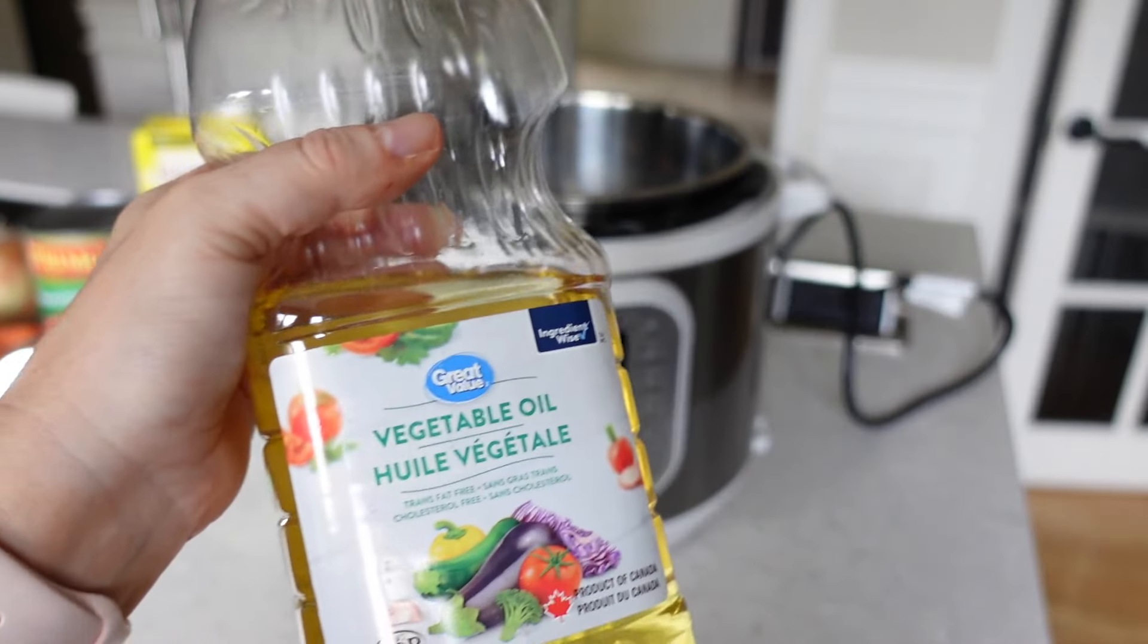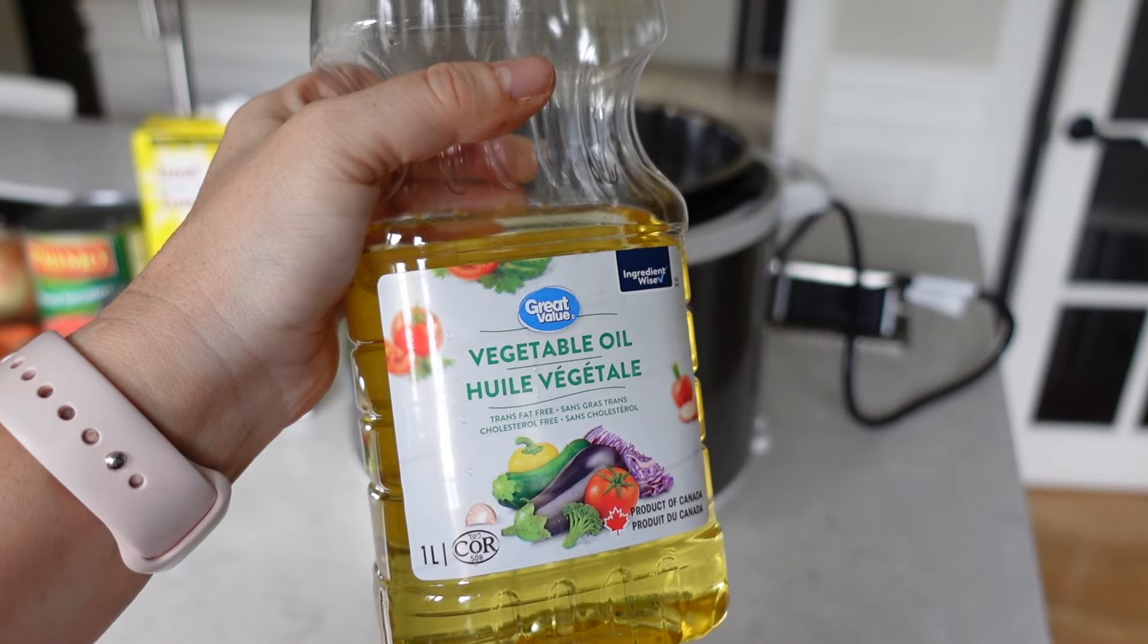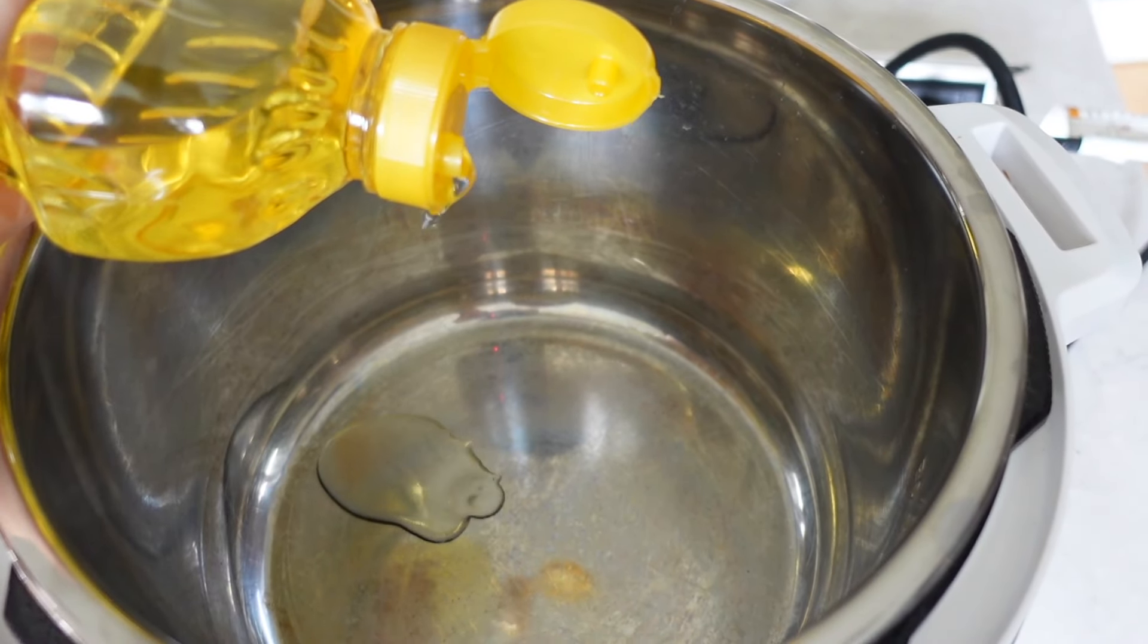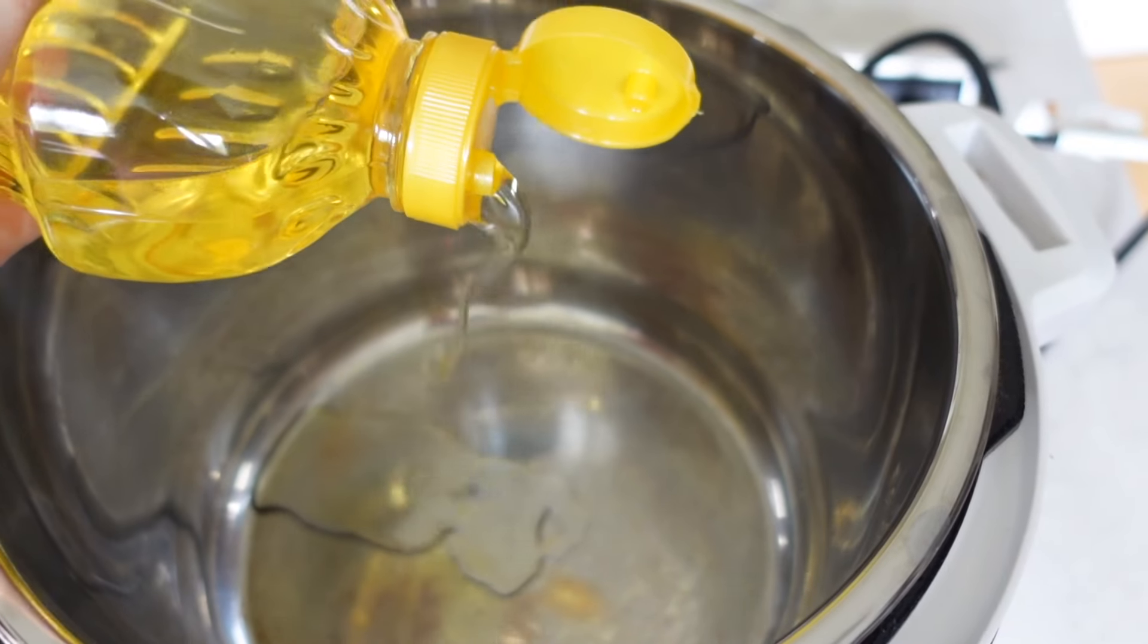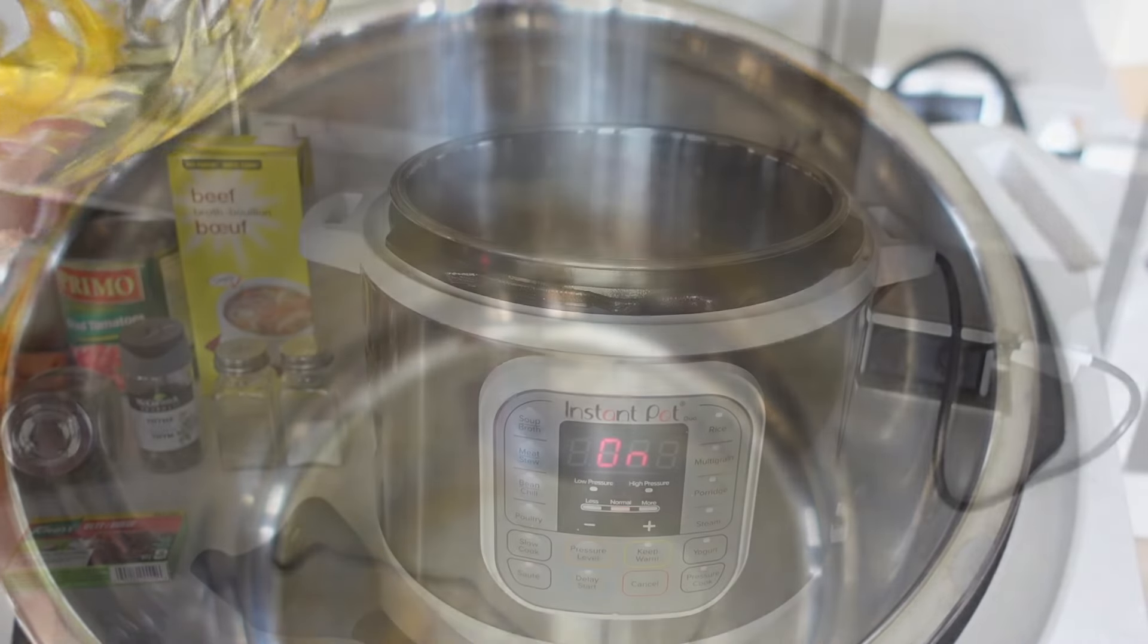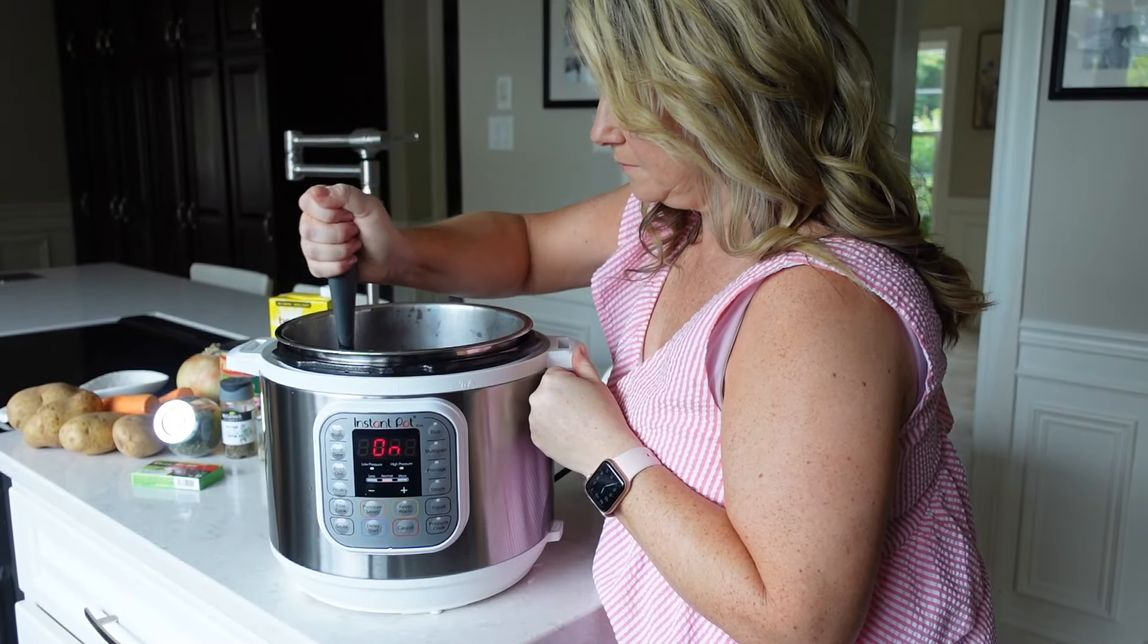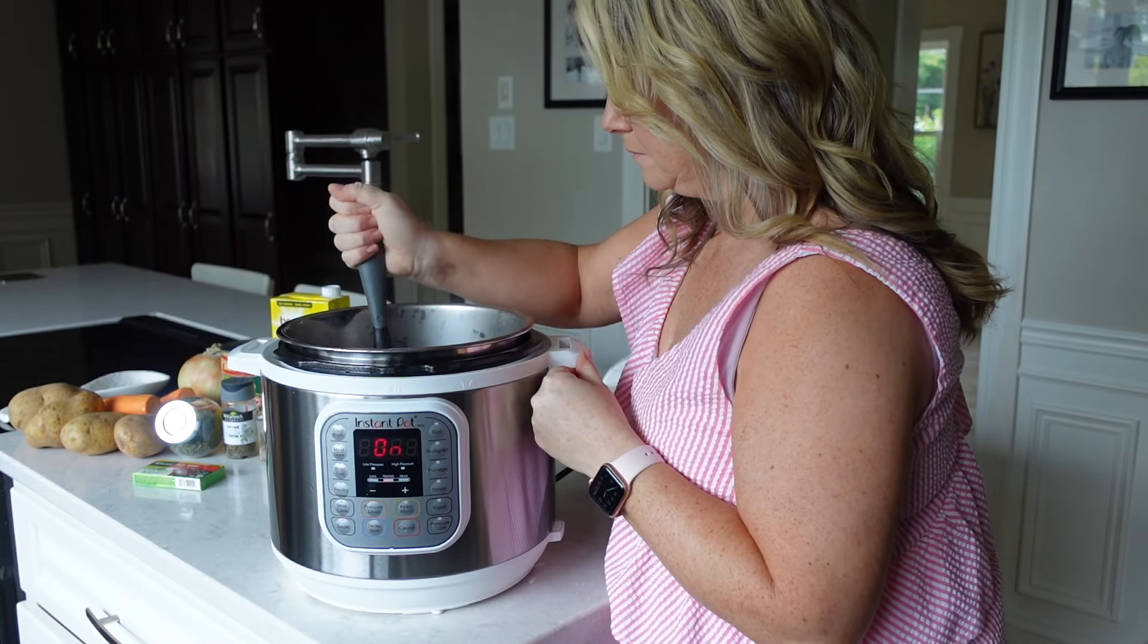The first thing you're going to do is turn your instant pot on to sauté and then add a little bit of oil. I just had vegetable oil so that's what I used and just add that to the bottom of the pot. Then you will add your ground beef to the pot and let it brown.